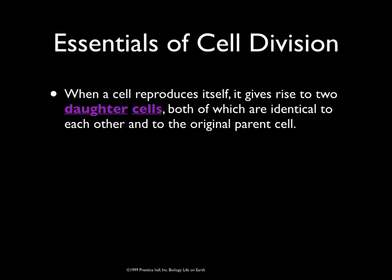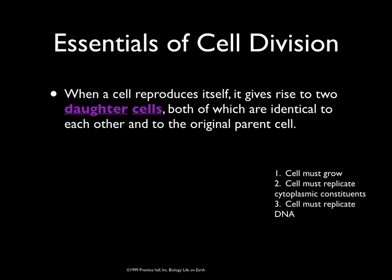When a cell reproduces itself, it gives rise to two daughter cells that are not only identical to each other, but also identical to the original parent cell. Before this can happen, before a cell can reproduce itself, there are three important things that must occur: the cell has to grow, the cell has to replicate its cytoplasmic constituents, and the cell must also replicate its DNA.